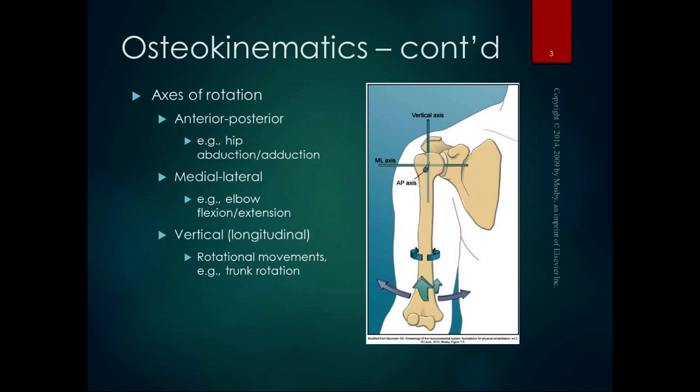The axis of rotation lies perpendicular to the plane of motion. The glenohumeral joint — the articulation between the head of the humerus and the glenoid fossa of the scapula — has three degrees of freedom, so it can move in all three planes. The anterior-posterior axis of rotation runs from anterior to posterior through the shoulder, perpendicular to the frontal plane, and is the axis of motion for frontal plane movements.